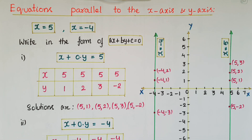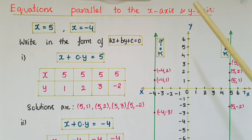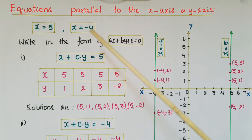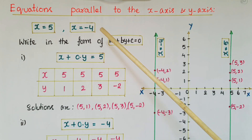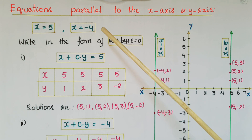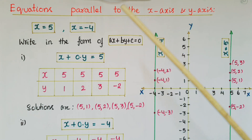Hello everyone. Today I am going to explain equations of lines parallel to the x-axis and y-axis. Suppose we want to draw x = 5 and x = -4 as linear equations in two variables on the graph.